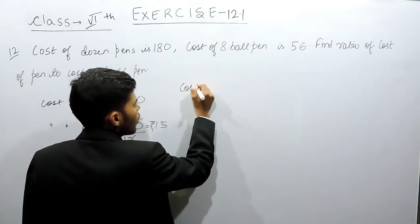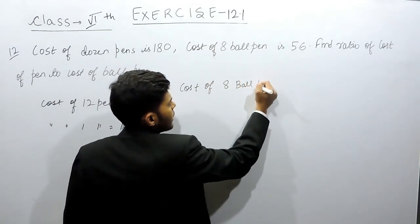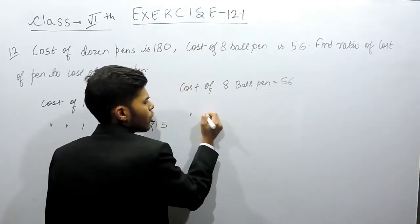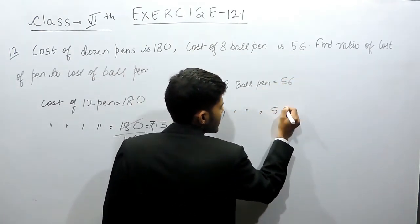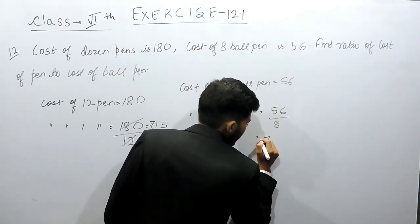Now cost of 8 ball pens is equal to 56 rupees. Therefore, cost of one ball pen is equal to 56 upon 8, that will be 7 rupees.